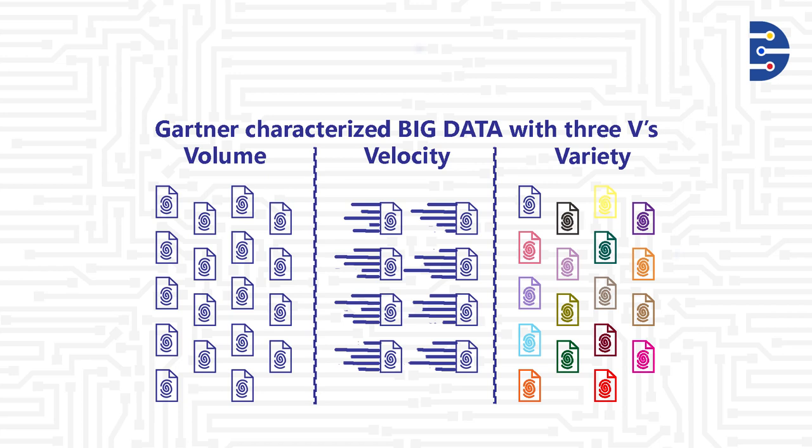The third V is variety. Data is generated in different formats - different elements, different objects, different systems generate data, some structured, some unstructured, and this variety is complex. So a good big data system satisfies all the three V's: V for variety, V for volume, and V for velocity.